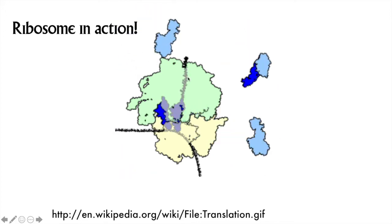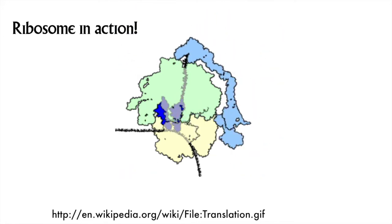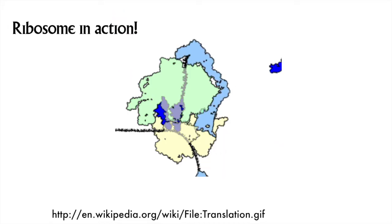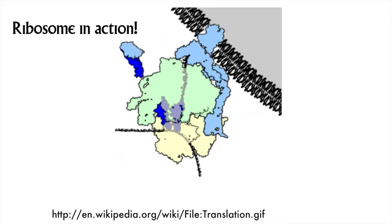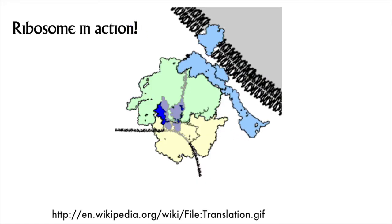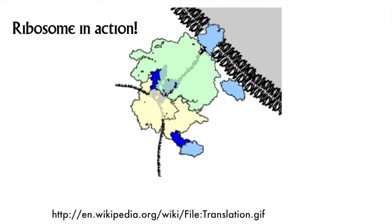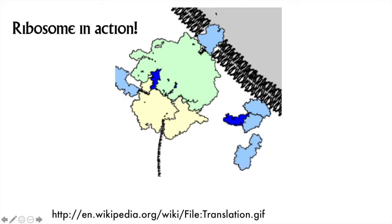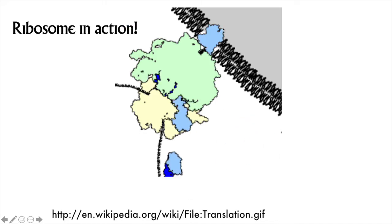So this is a free ribosome, but a sequence of amino acids at the beginning of the polypeptide tell another molecule that it needs to be bound to the ER. You'll hear a lot more about ribosomes in Chapter 17 in Unit 3.